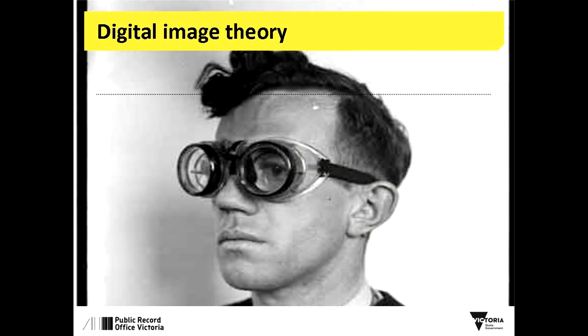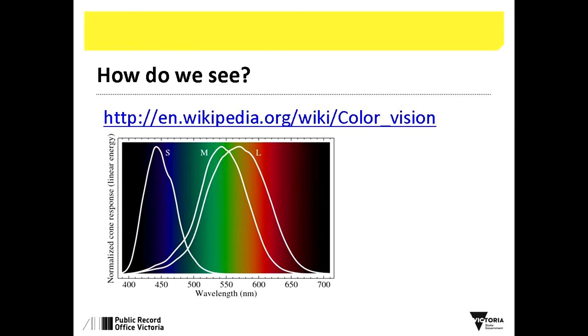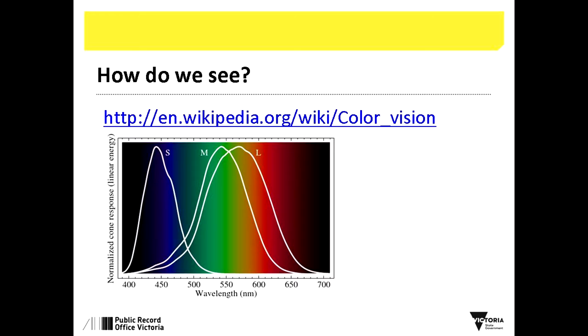Which means we need some digital image theory. First of all, how do we see? That's a chart of the response of the cells in our eyes to wavelengths of visible light. Most people have three different types of cone cell in their eye that basically pick up light of those wavelengths. People who are colorblind actually only have two cone cells, and there are some people who have four — they're kind of genetically lucky. You'll notice that the three peaks in that chart map onto the red, green, and blue areas of the spectrum in rough terms.